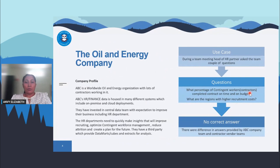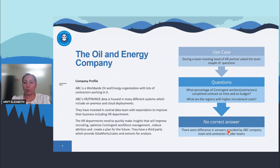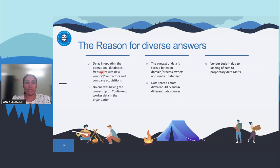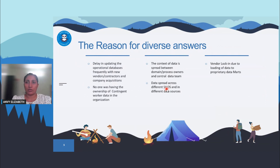This all arose from a use case: a meeting at the oil and energy company where HR partners and vendors from different areas were present. An HR partner asked: 'What percentage of contingent workers completed their contract on time and on budget, and which regions have higher costs?' When this question was raised, different HR partners gave different answers. The main reason for these diverse answers was the delay in updating operational databases with new contractor additions, no single ownership of contingent worker data, data context spread across the domain team, process team, and central data team, and vendor lock-in where data was locked in proprietary trade modules.